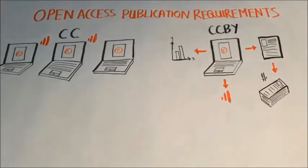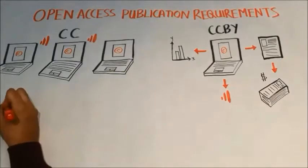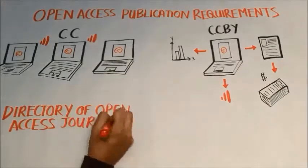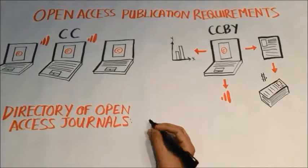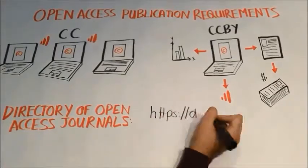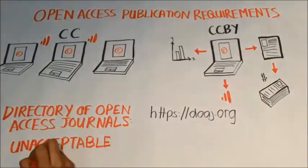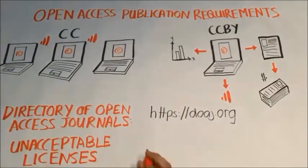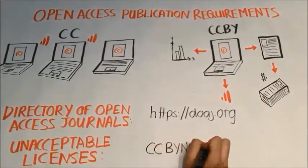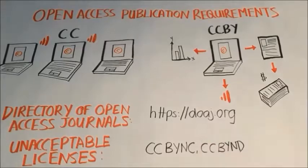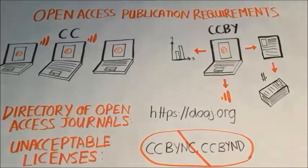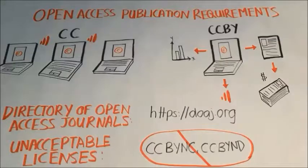Innovators should consult the Directory of Open Access Journals to find a suitable journal that complies with GCC's publication requirement. A search for a particular journal in the directory will return a journal name with the Creative Commons licenses available for that journal listed beside it. The chosen journal must not have an embargo period during which the article is not openly accessible.